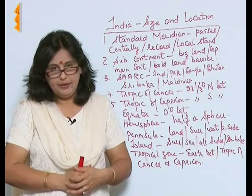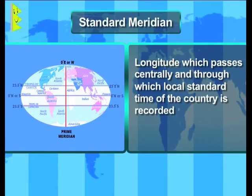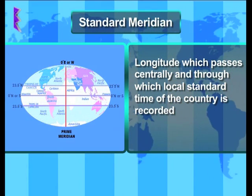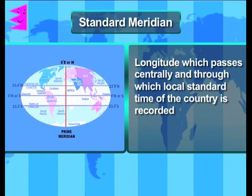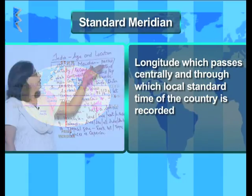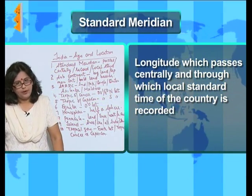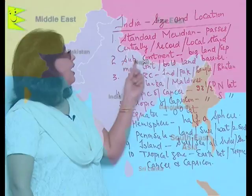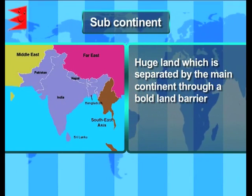Standard Meridian — I am sure all of you know about it. Standard Meridian is that longitude which passes centrally in a country, and it is the longitude by which the local standard time of the country is recorded. So it's a very important longitude.